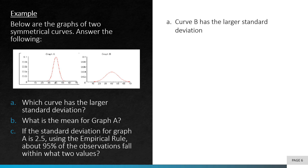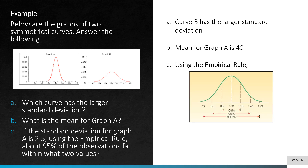Next question: What is the mean for graph A? For a symmetrical curve, the mean is right in the middle, so for graph A, the mean is 40. The third question: if the standard deviation for graph A is 2.5, using the empirical rule, about 95% of the observations fall within what two values? Using the empirical rule, 95% corresponds to two standard deviations from the mean. We use the formula: mean ± 2 × standard deviation. With a mean of 40 and standard deviation of 2.5, the two values are 35 and 45.